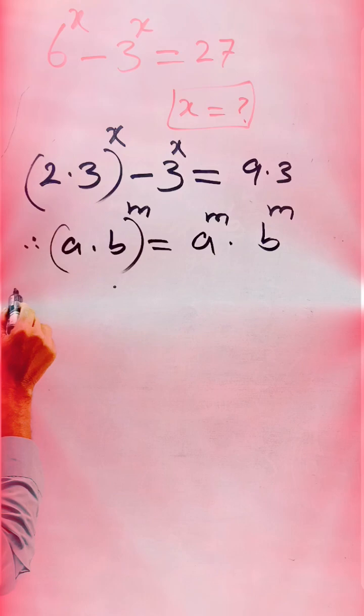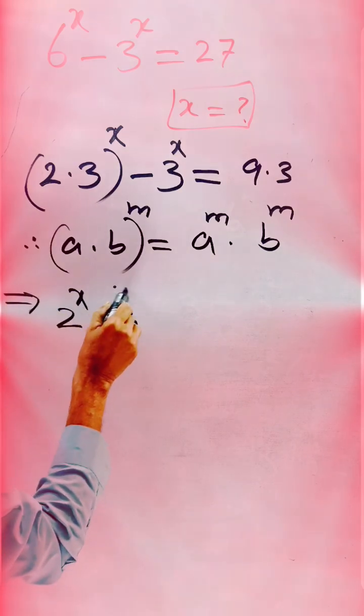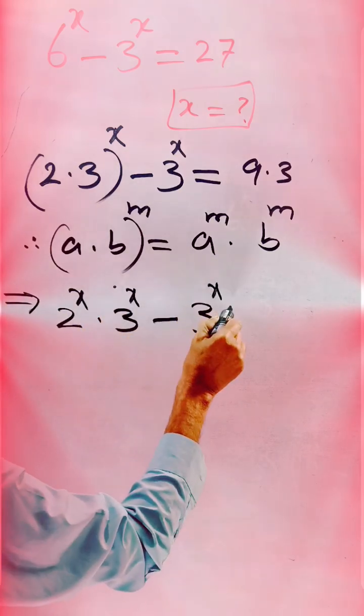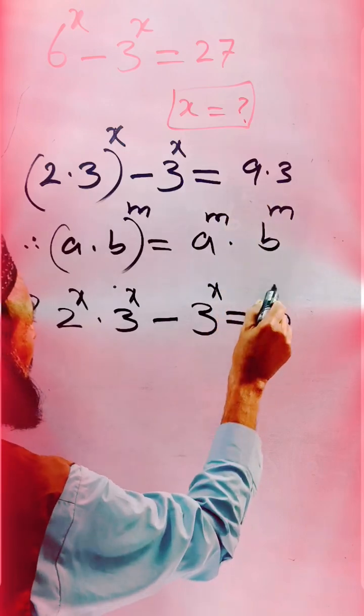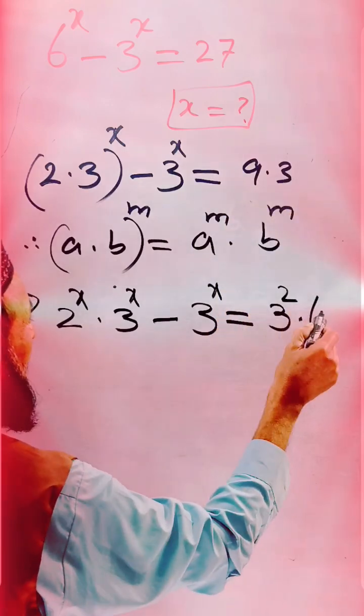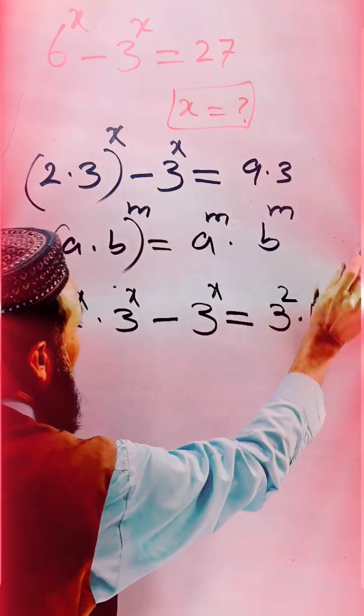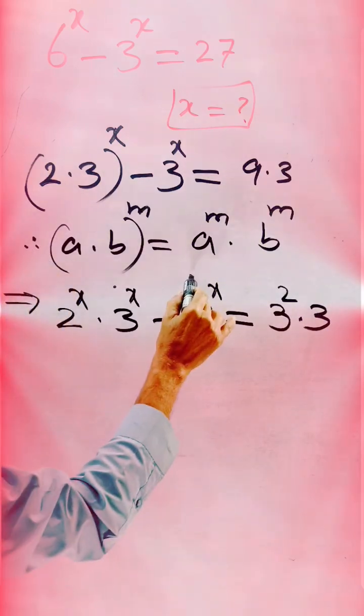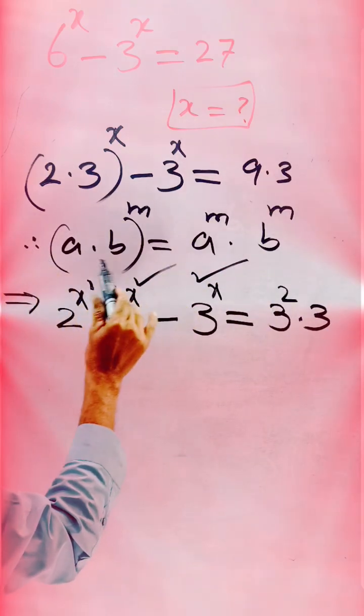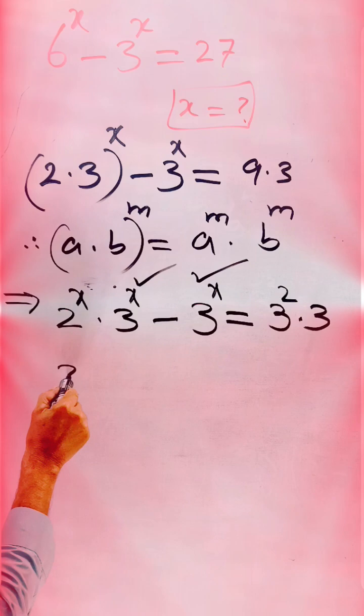Similarly, expanding this form: 2^x times 3^x minus 3^x. And 9, 3 square we can write, and 3 we can write 3. And in the further step, we can do this one: 3. Now taking common 3^x.